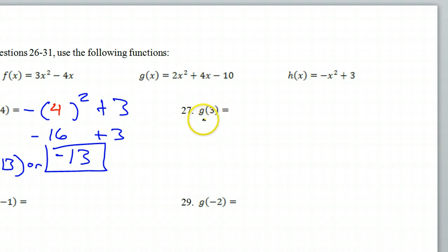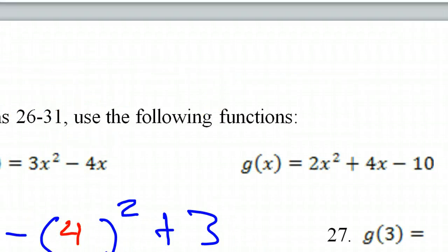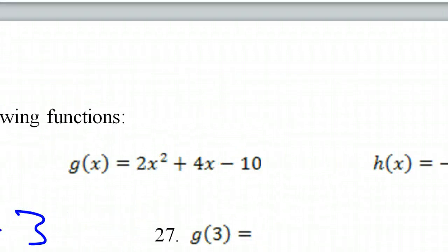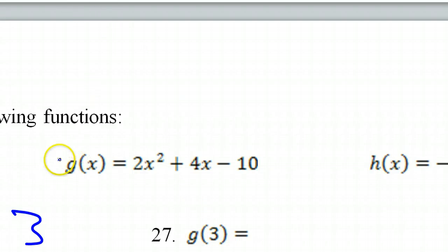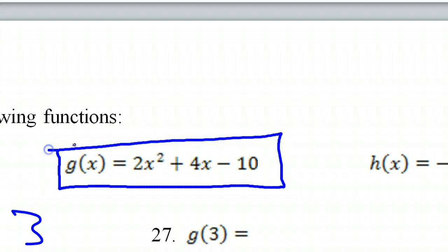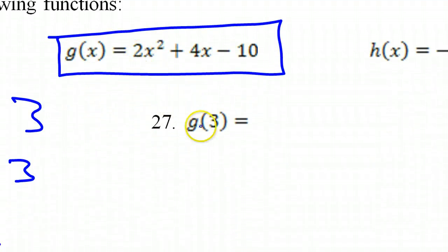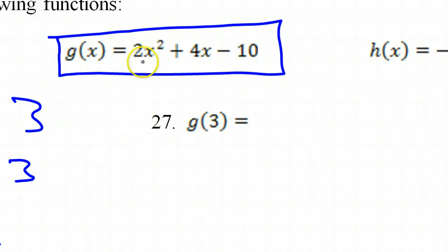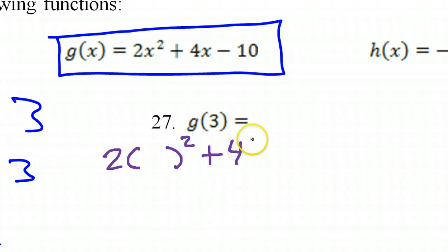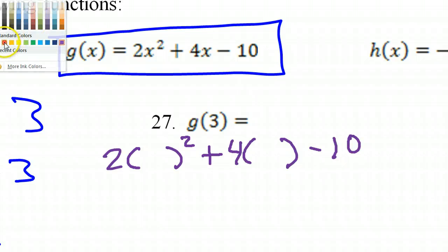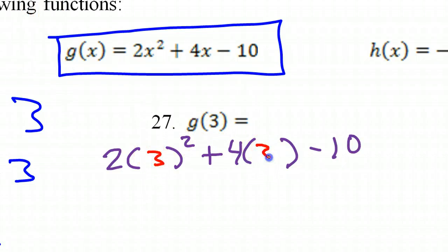Number 27: G at 3. You have to be able to do it by hand. This function refers to function g, so we focus our eyes on function g. When I'm going to substitute for a variable, I'm going to start by writing the function with parentheses instead of a variable. So 2x squared becomes 2 parentheses squared, 4x becomes 4 parentheses, and minus 10. That gives me a nice place to substitute this 3 into — so I'll put a 3 here and a 3 here.